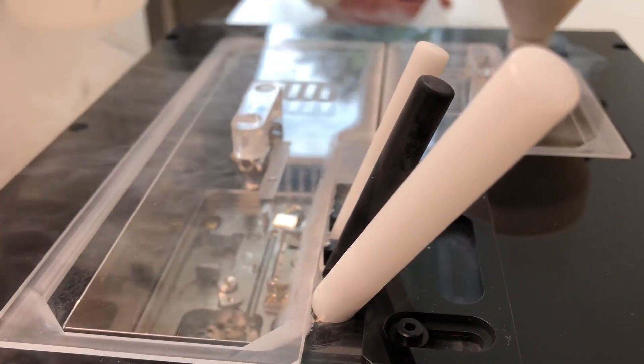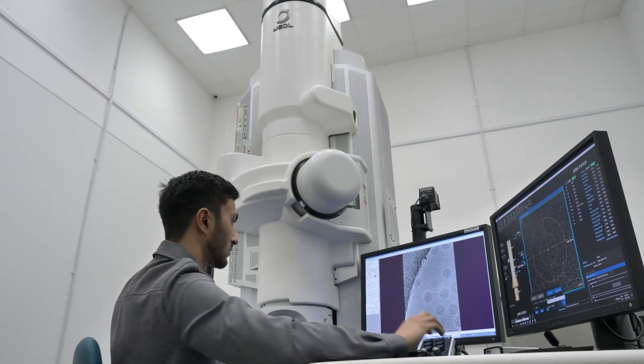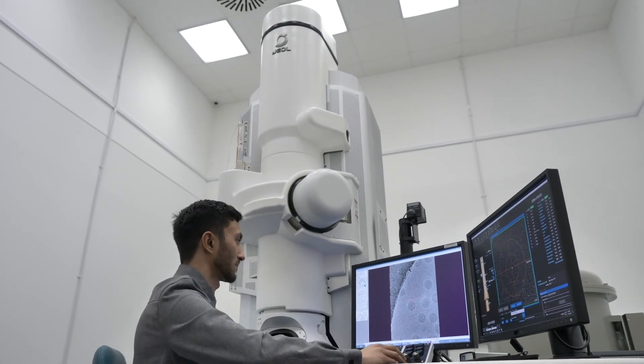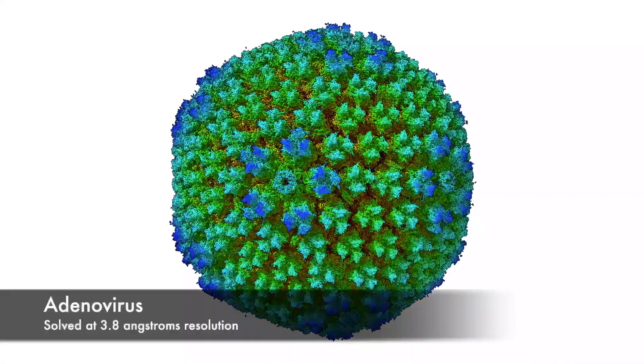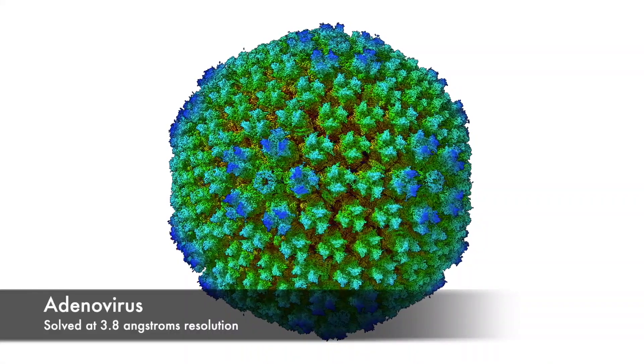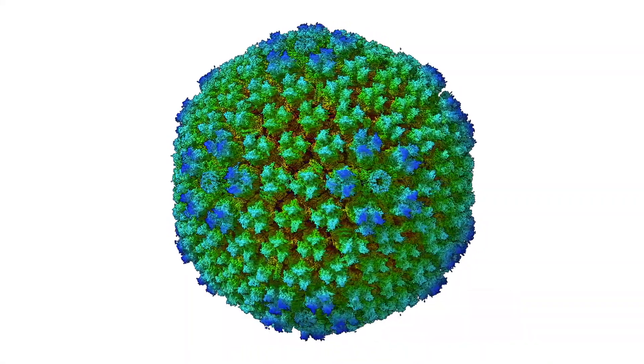This Nobel Prize-winning structural biology method employs the transmission electron microscope to record images of macromolecular assemblies such as viruses or envelope complexes, frozen in a thin layer of vitreous ice. These images are then computationally processed to calculate three-dimensional density maps approaching and sometimes reaching atomic resolution.